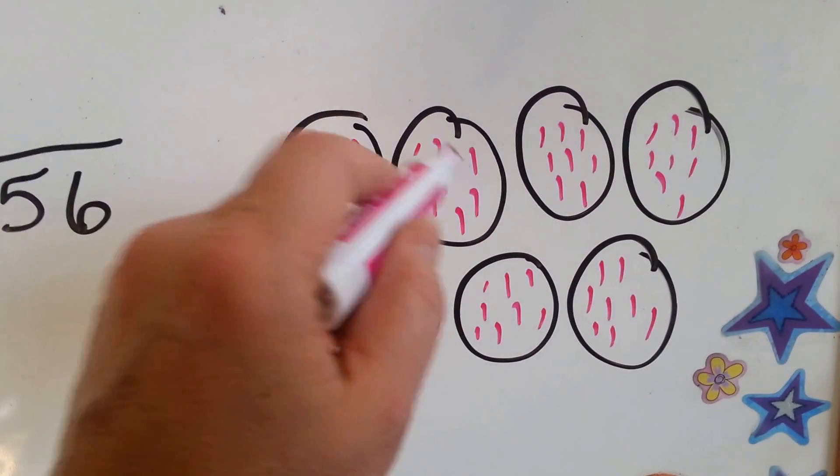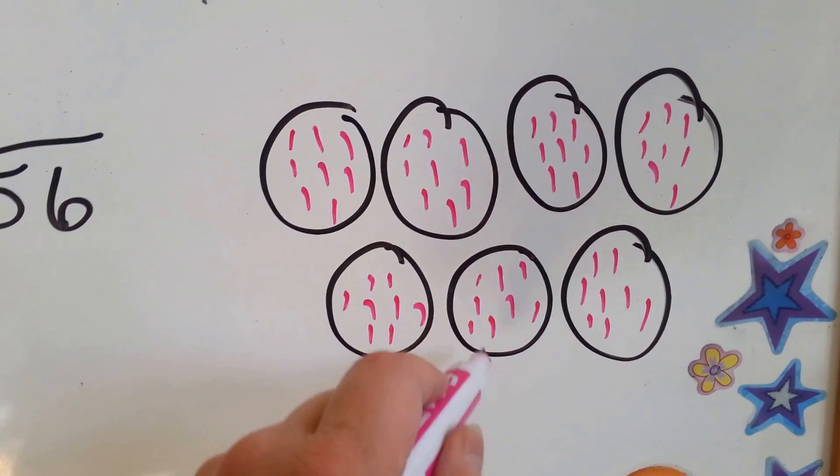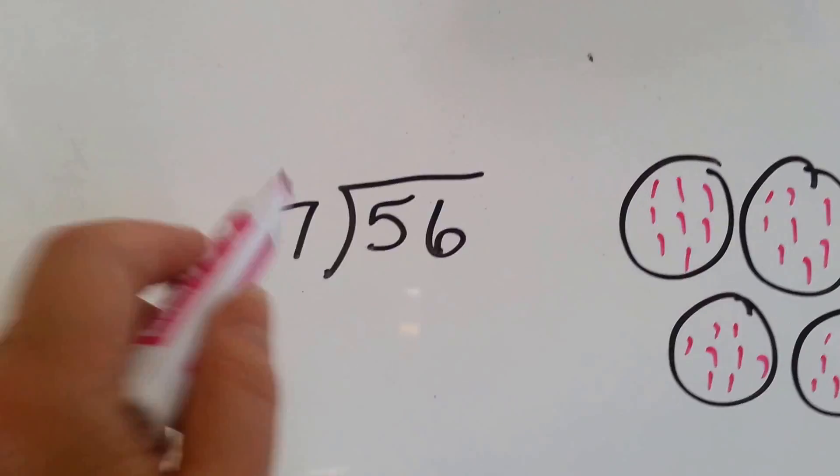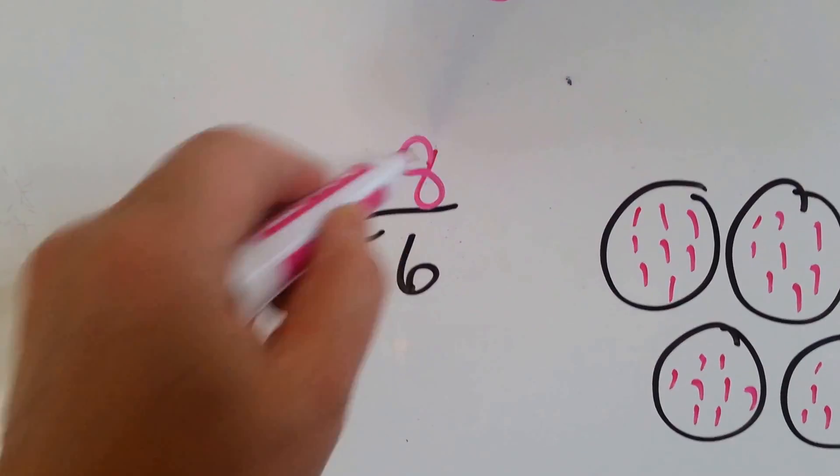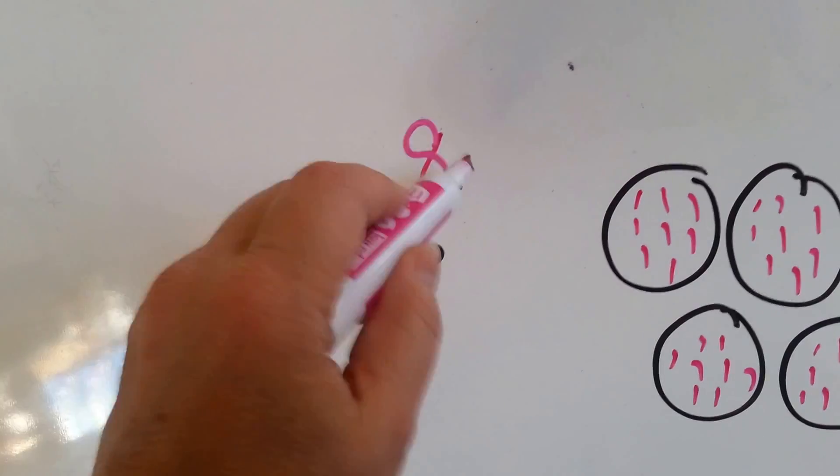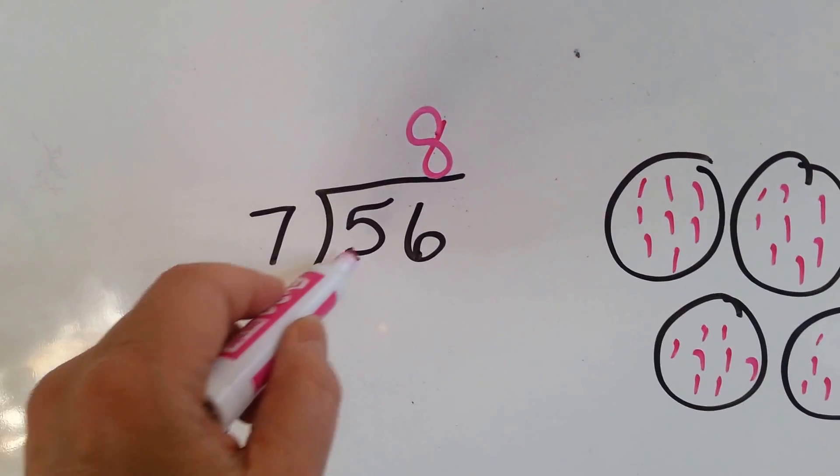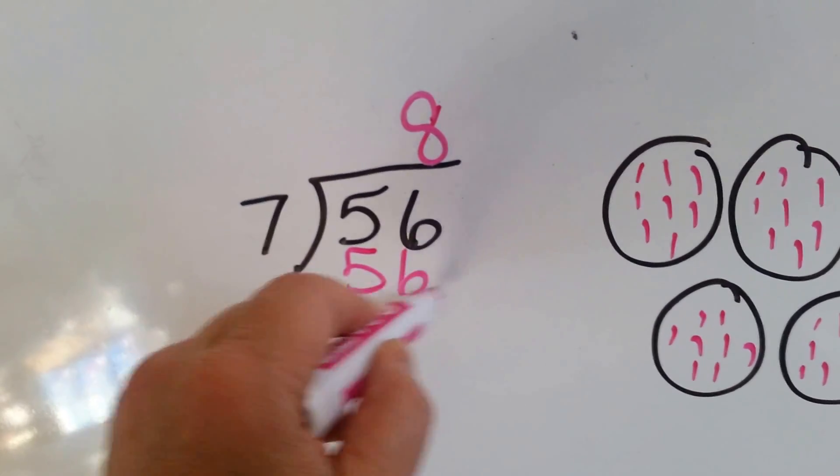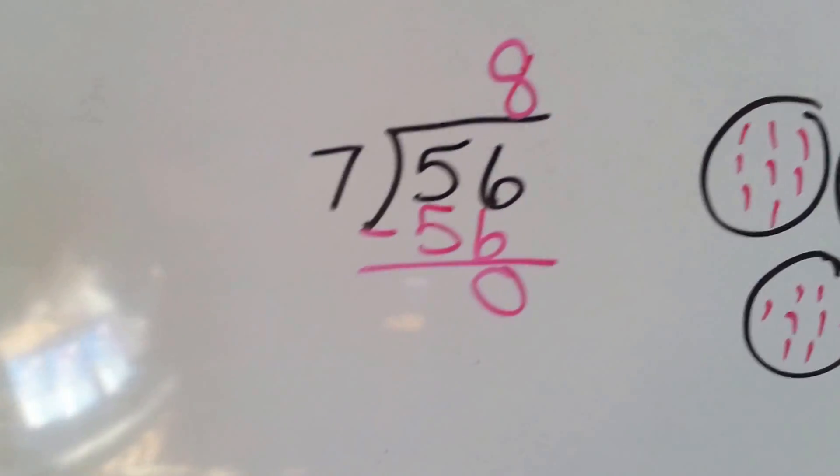1, 2, 3, 4, 5, 6, 7, 8. Yep. 1, 2, 3, 4, 5, 6, 7, 8. Yep. So, 7 goes into 56 8 times. We do our multiplication right here. 7 times 8 is 56. We do our subtraction and we get a remainder of 0.